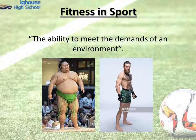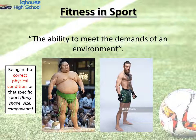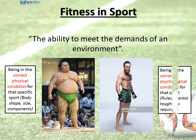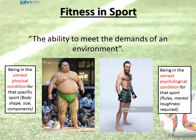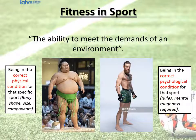Looking at this in more detail in relation to sport — we've got the sumo wrestler, and in order to meet the demands of their environment, they've got to be in the correct physical condition for that specific sport. So we're talking about body shape, body size, and specific components of fitness such as body composition, power and strength. On the opposite side, we've got Conor McGregor, who's a mixed martial arts fighter. Clearly they have very different physical shapes, but equally they'll have different psychological aspects to consider — different rules they need to know, different tactics and strategies, and the mental toughness required to compete. Both the physical and psychological aspects need to be considered when talking about somebody meeting the demands of an environment.